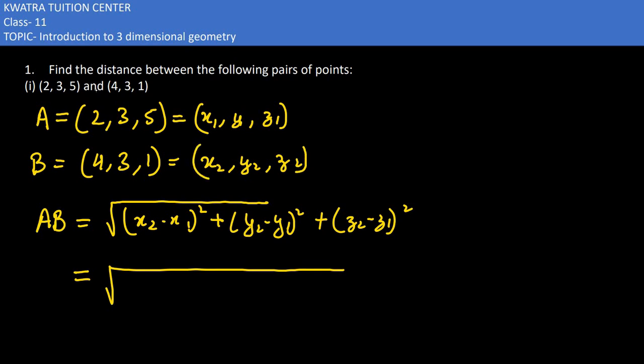So x2 is 4, x1 is 2. 4 minus 2 square. y2 minus y1 is 3 minus 3 square. z2 minus z1 is 1 minus 5 square. So 4 minus 2 is 2 square.